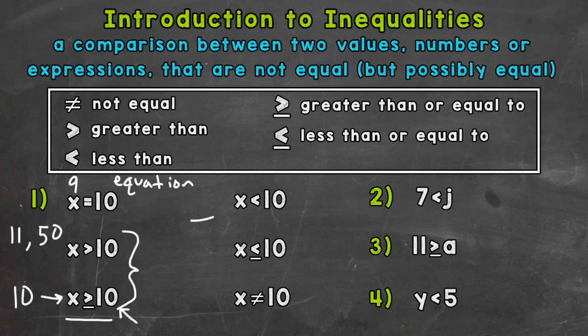Moving on to x is less than 10 — any value less than 10 would be a correct solution. So 1, 2, 8, negative 8, whatever the case may be. Again, we have infinite solutions to that inequality. Now, 10 would not be a correct solution because 10 is not less than 10.